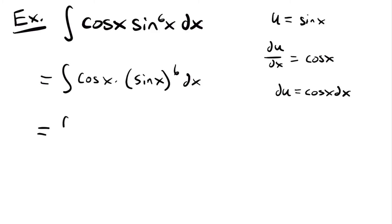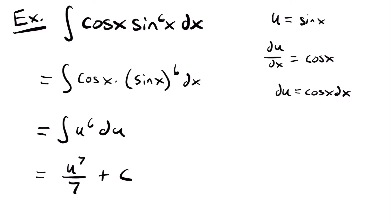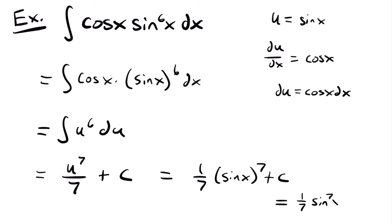Our integral becomes the integral of u to the sixth power times du. Applying the power rule: u to the seventh power divided by 7, plus c. All that's left is to replace u with sine x. This gives us one seventh times sine x to the seventh power plus c. We can also write this as one seventh times sine to the seventh power of x plus c — either way is the right answer, but the second form looks a bit nicer.